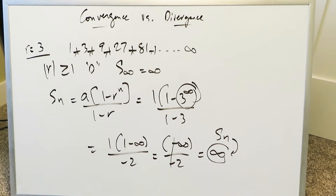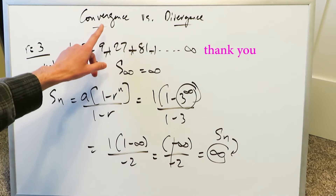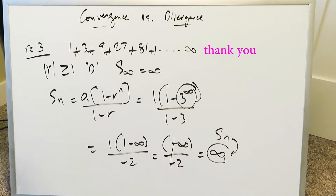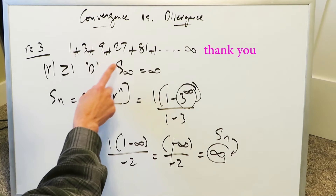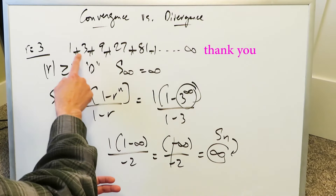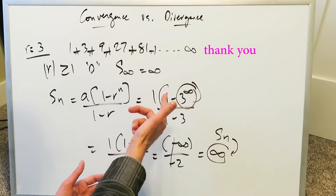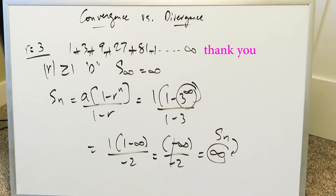Remember very clearly the distinction between convergence and divergence. These are simple cases, but there are also tests for convergence that we'll need to learn for more complex series. Also remember the difference between a sequence and a series: a sequence is a defined set of terms listed in order, while a series brings those terms together as a sum. Thank you for joining. Have a good day.